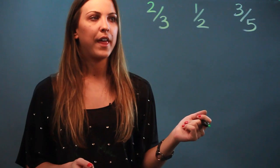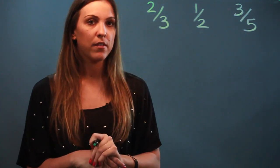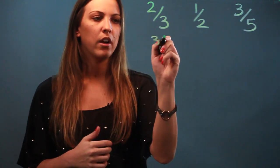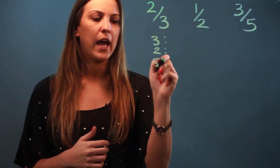So we're looking for the LCM of three, two, and five. We're looking for the smallest number that all three of those numbers can go into. If we need help, we can just start listing out our multiples.